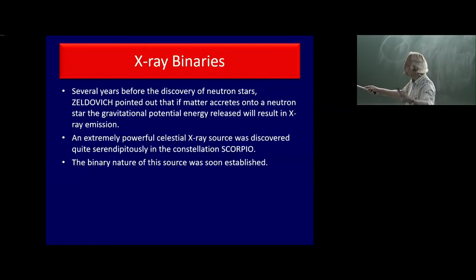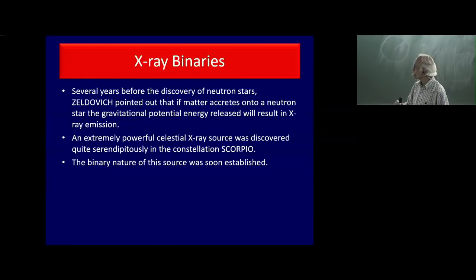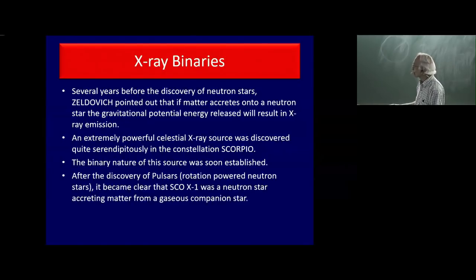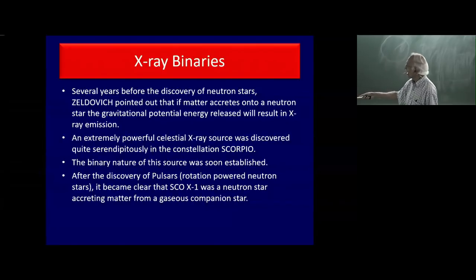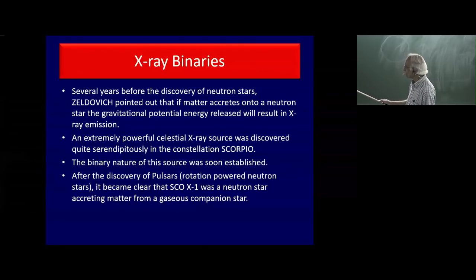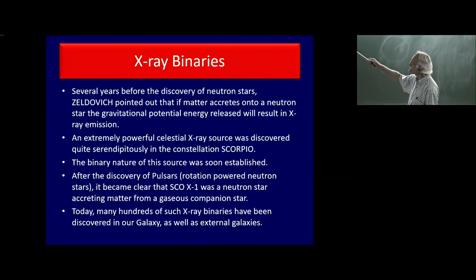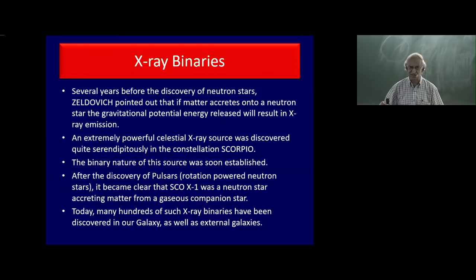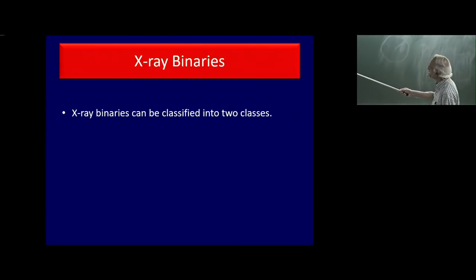It was soon established that whatever this source was, it was a binary because the optical companion was detected. Professor Srikanton, who used to be the director of TIFR in Bombay, was involved in this when he was very young and at MIT in Boston. After pulsars were discovered — announced in February 1968 — it became clear that Sco X-1 was in fact a neutron star accreting gas from a companion star.